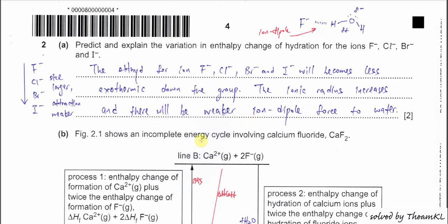Question 2a: predict and explain the variation in the enthalpy change of hydration for the ions chloride, bromide, and iodide. The enthalpy change of hydration is when the gaseous ion dissolves in water — it involves attractions between the ion and the water molecules. These attractions are called ion-dipole forces, since the anion is a charged particle and water has a dipole.